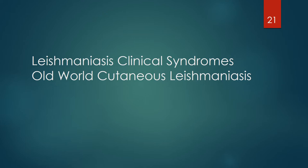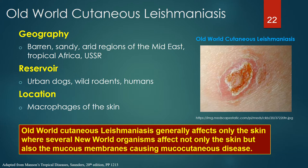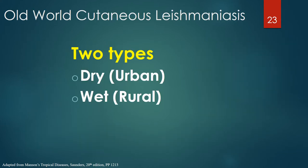Old World cutaneous leishmaniasis is primarily found in the barren, sandy, arid regions of the Middle East, tropical Africa, and the old USSR. Reservoir hosts include urban dogs, wild rodents, and humans, with organisms found in the macrophages of the skin. Old World cutaneous leishmaniasis generally affects only the skin, whereas several New World organisms affect not only the skin but also the mucous membranes, causing mucocutaneous disease. There are generally two types: dry or urban, and wet or rural.